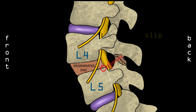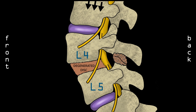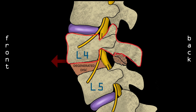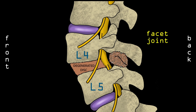The most common reason why spondylolisthesis happens is because the disc between the two bones becomes degenerated. As a result, the mechanical forces between the two bones become abnormal, eventually leading to an instability. As time goes on, the joint between the L4 and L5 vertebrae — called the facet joint — develops bone spurs, what we commonly call arthritis.